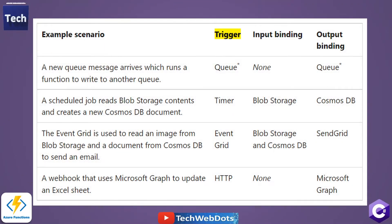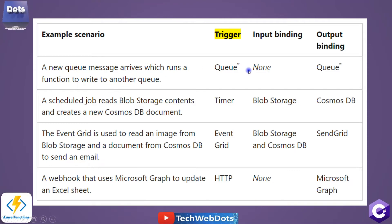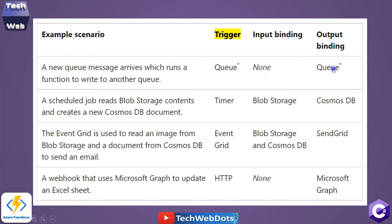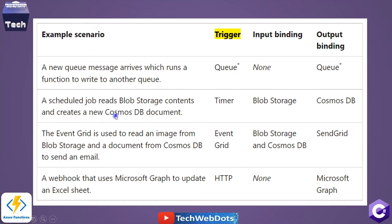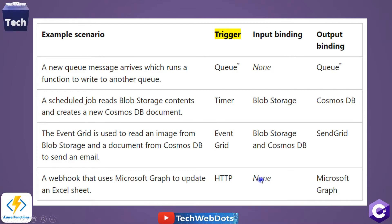Here are some practical binding scenarios. In the first example, a new queue message arrives which triggers a function to write to another queue — the input is a message and the output is a new queue message. Another example: a timer schedule job reads from Blob Storage and creates a new Cosmos DB document. Cosmos DB is a document database in Microsoft Azure services. Similarly, you can see examples involving Event Grid and other bindings as input for graph processing.